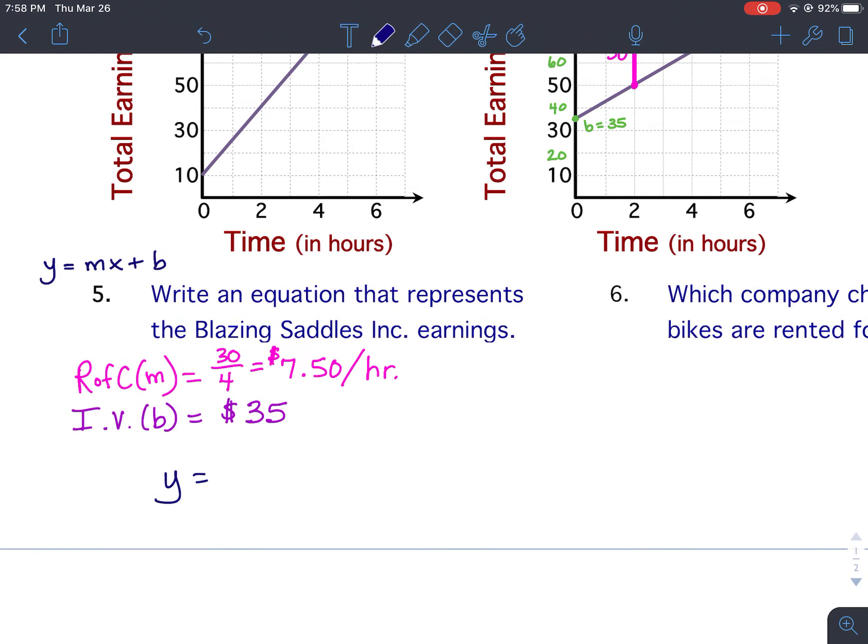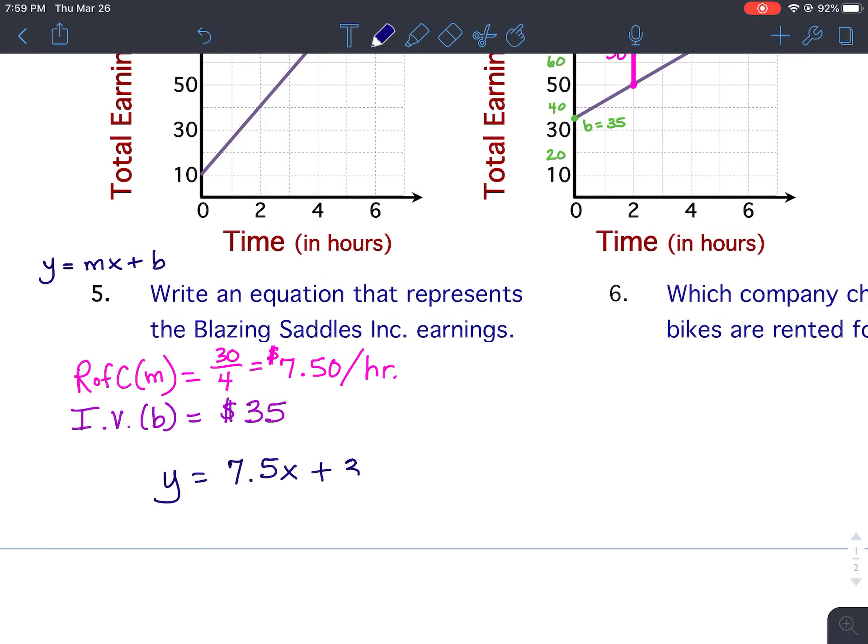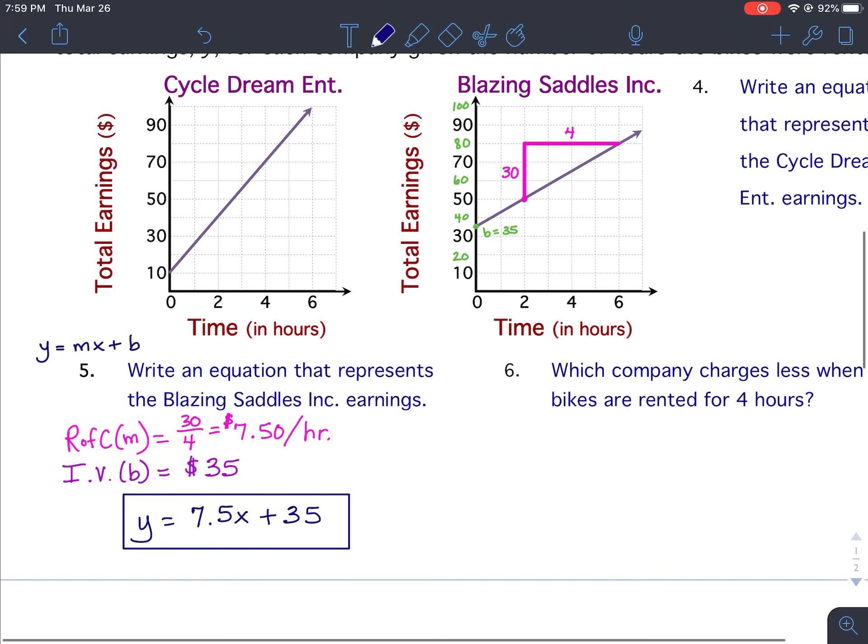Now, when we go to write the equation, you can actually drop the 0 after the 5. So you could put 7.5x. If you put 7.50x, I would not mark it wrong, but you can drop the 0 for the equation. So 7.5x, and then the initial value goes at the end, plus 35. So that is our equation for number 5, which is the information for Blazing Saddles. If you have any questions on number 5, please ask.